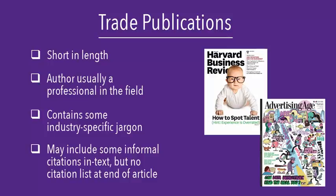You may see informal citations throughout the text, but there won't be any formal list of citations at the end of the article. Examples of trade publications are Harvard Business Review and Advertising Age. These sources are not scholarly, but they may be appropriate for your research depending on the requirements your professor has outlined. Trade publications are great sources to use for something like a marketing or business plan.